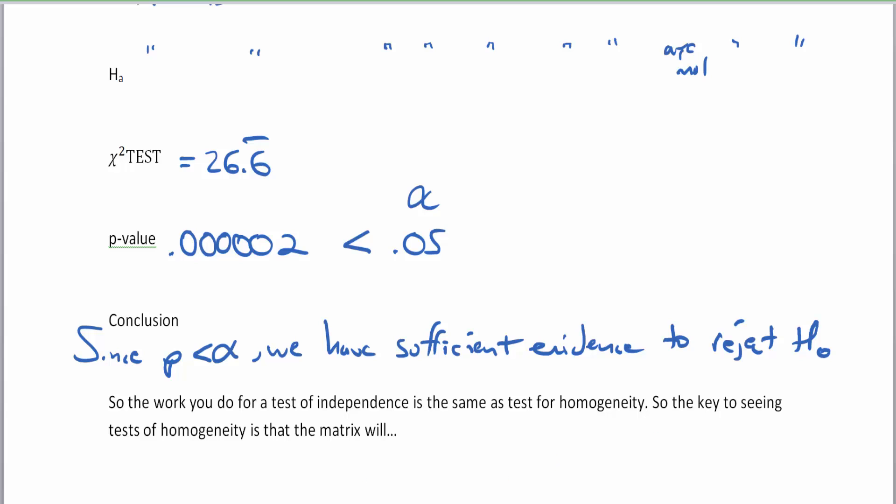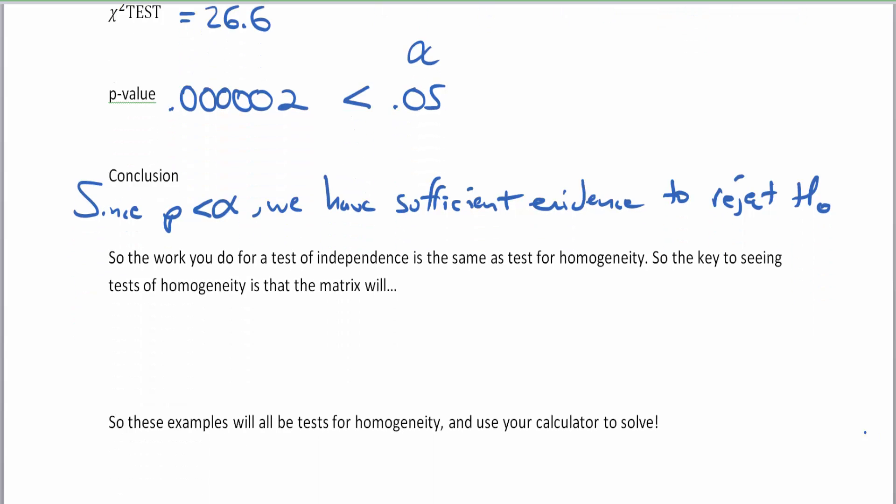The work you did for the test of independence was the same as the test for homogeneity. The key to seeing the test of homogeneity is that the matrix will only have two rows, and we can do the test for homogeneity between those two rows. What you've done before with the test for independence makes this part of the work so much faster and easier.